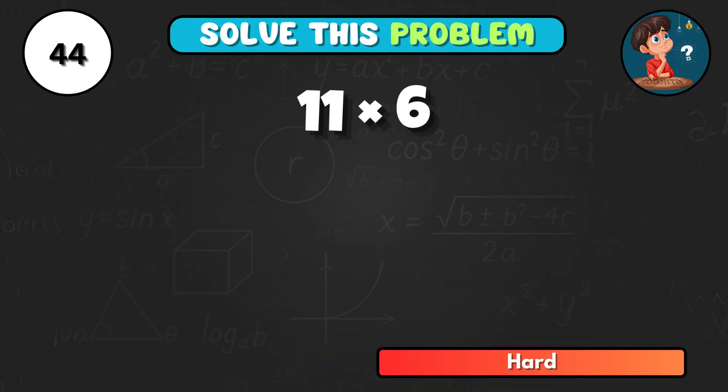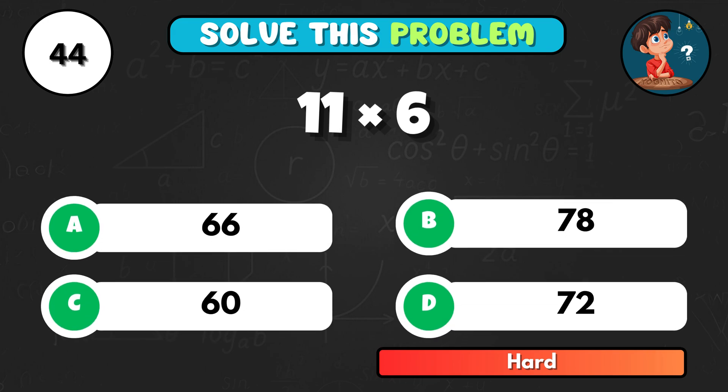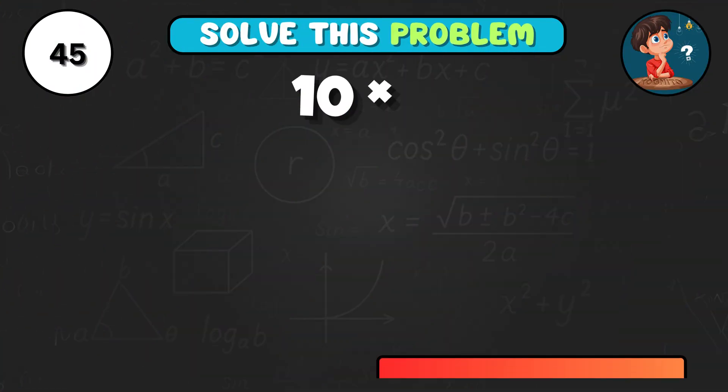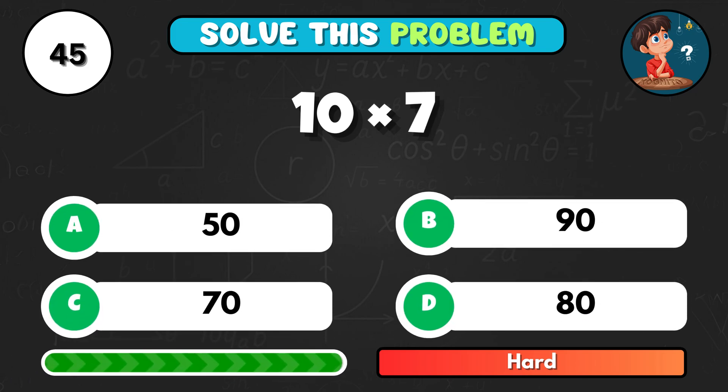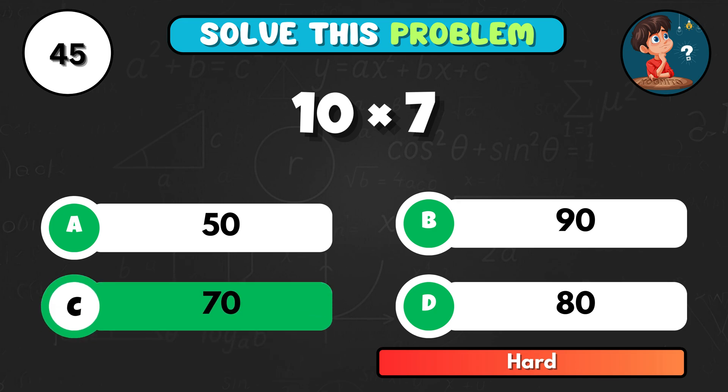Think fast. What's 11 times 6? It equals A, 66. One more quickie. 10 times 7. Go. That's C, 70.